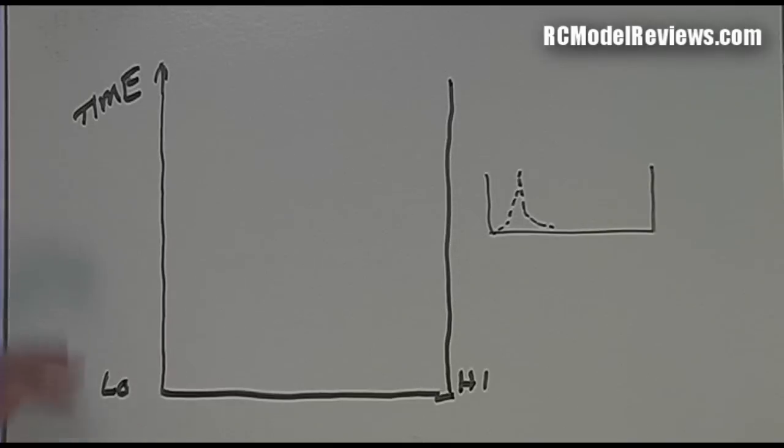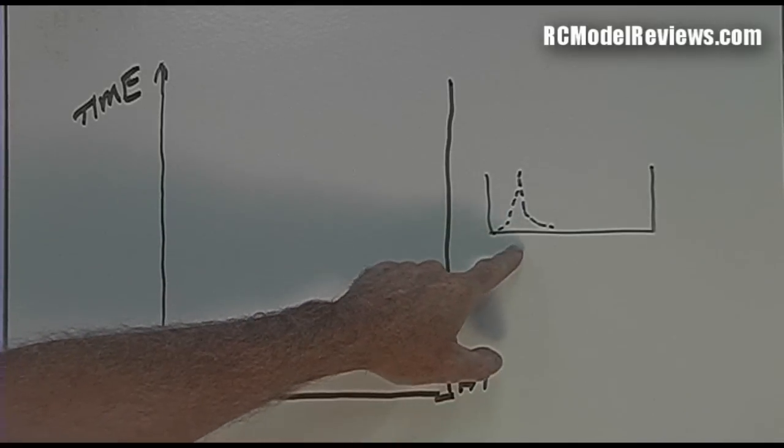What I've done here is I've drawn a little blank graph and the vertical axis here is time. So if we assume this is now, then this is going to be a little bit later, and here is a part of the 2.4 gigahertz band.